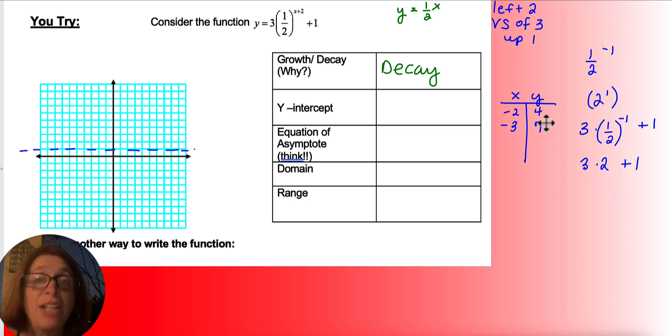I do want my y-intercept. So 0. That's going to give me 3 times 1 half squared plus 1. So that's going to be 1 fourth. So 3 times 1 fourth plus 1, which would be 3 fourths plus 1, which would be 1 and 3 fourths or 1.75.